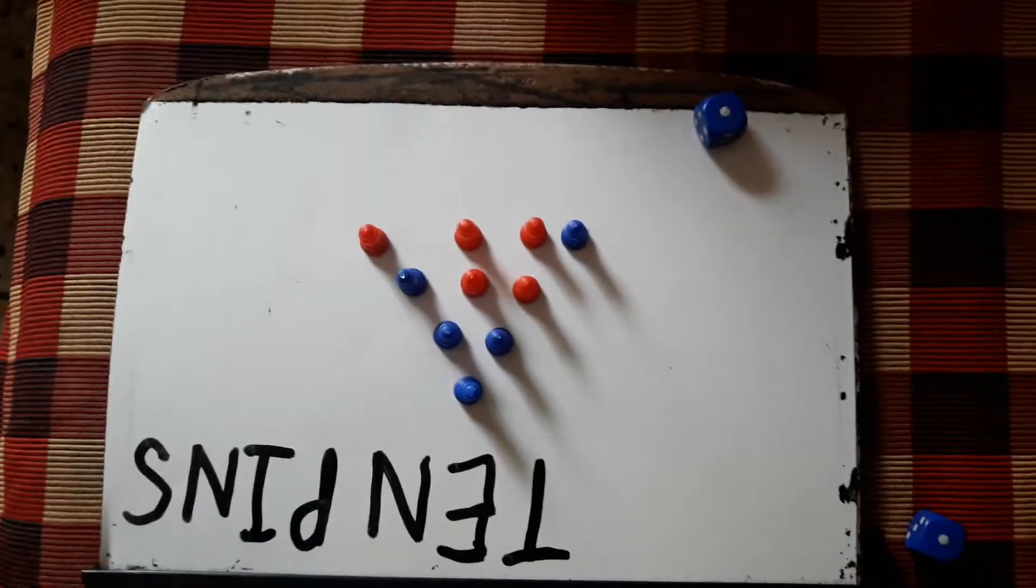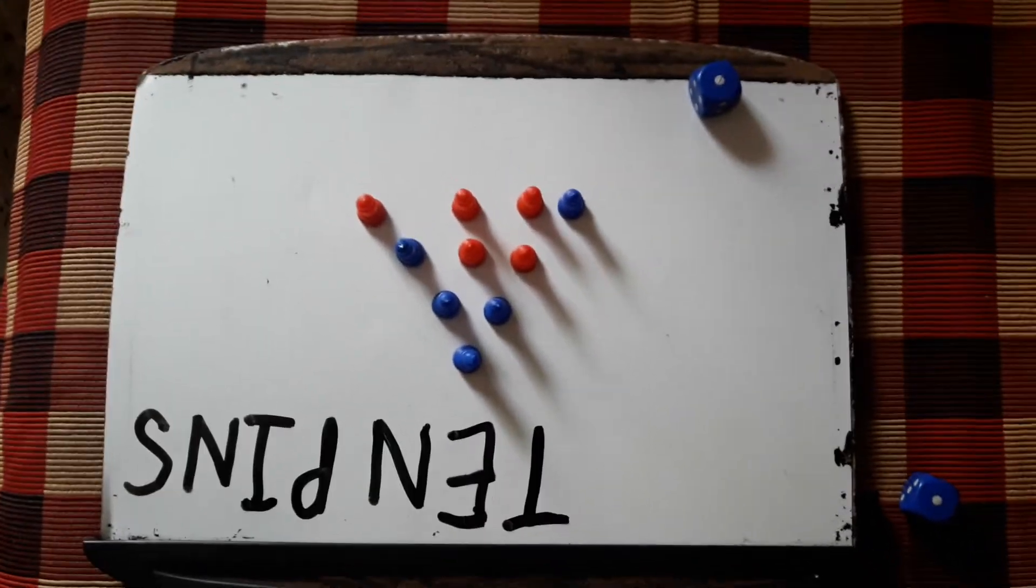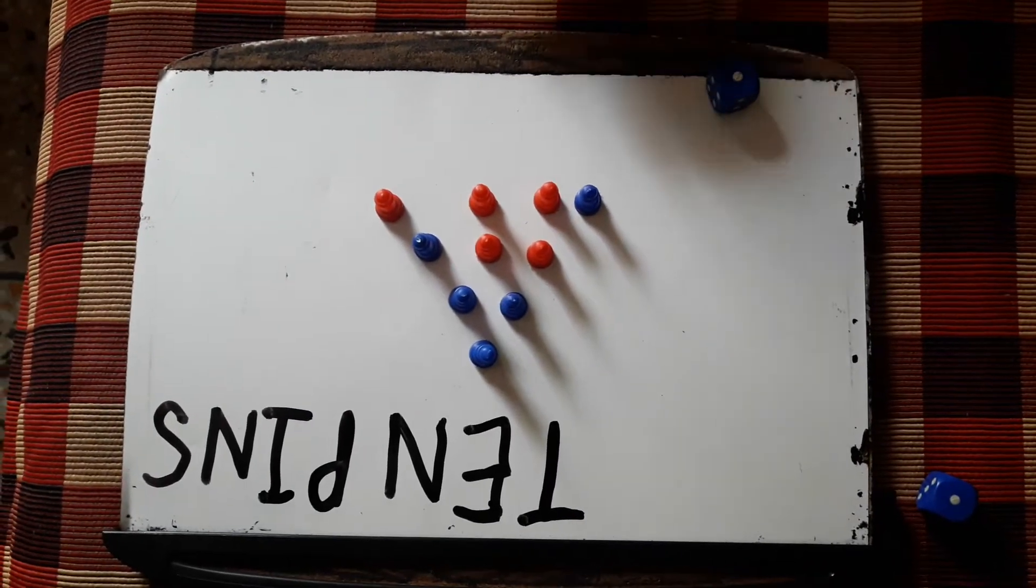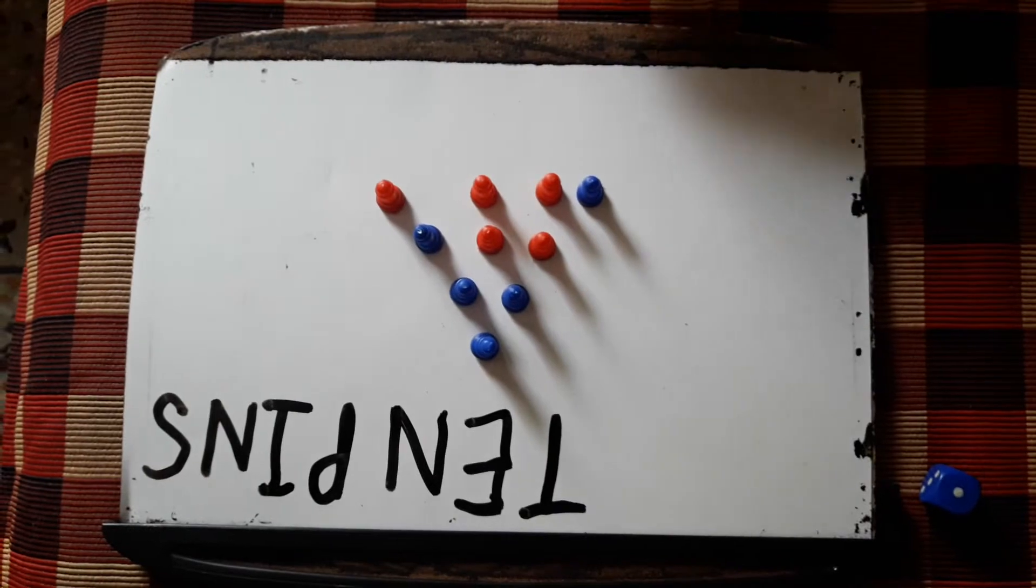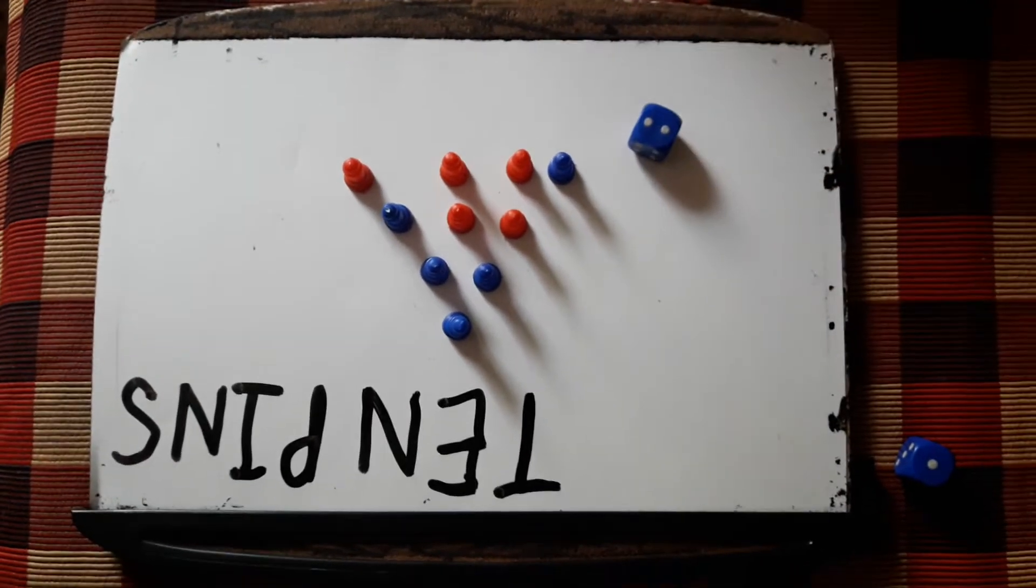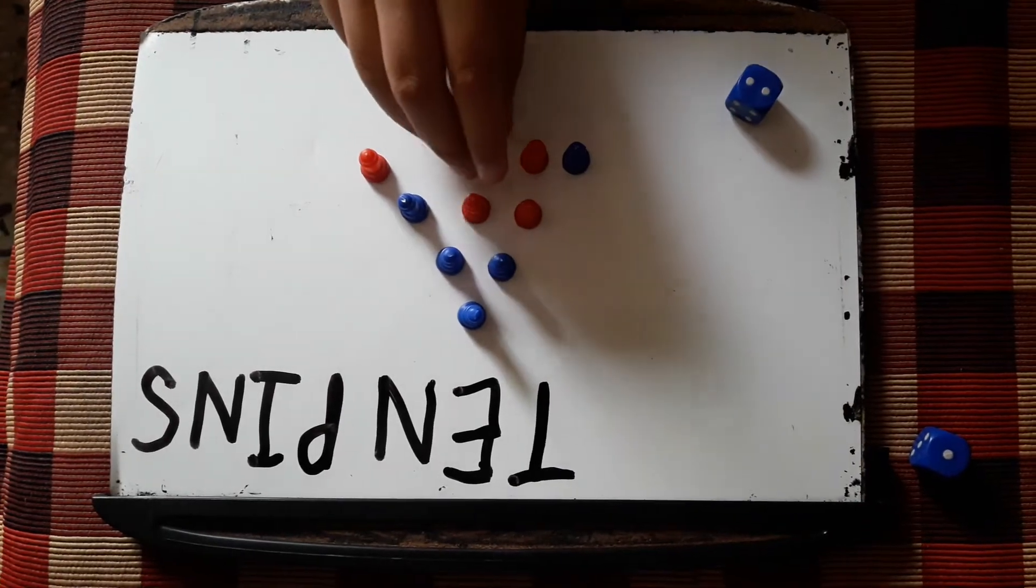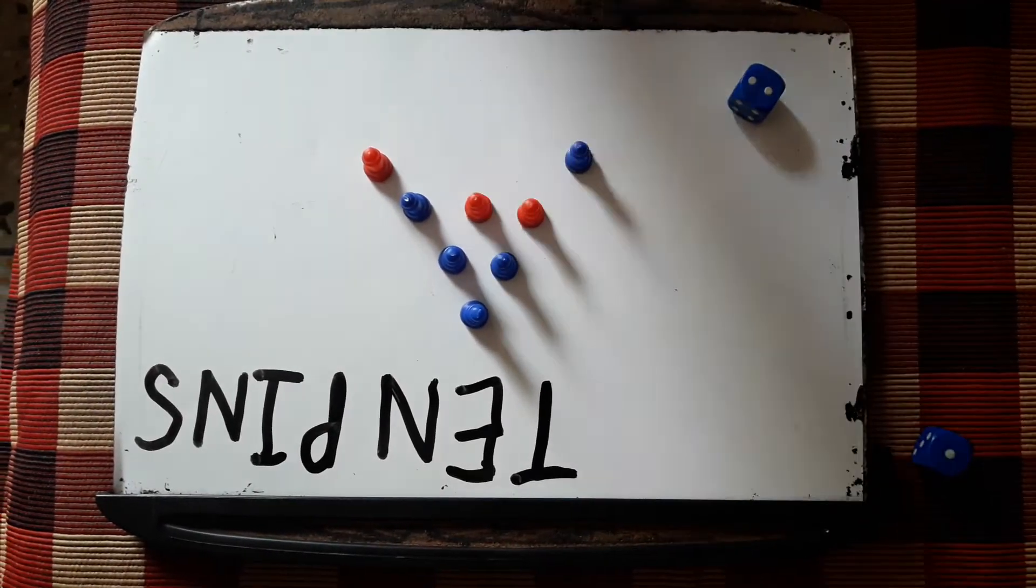So how do we play this game? I will tell you. First, a player will roll a dice. Like I got 2. So I have reds, so I will remove 2 of my reds.